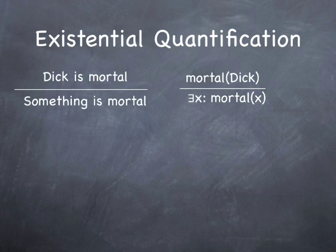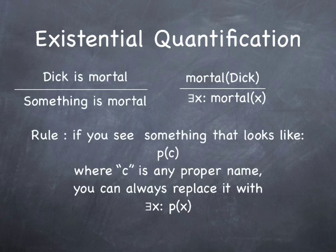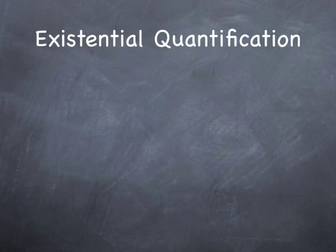So here's the rule. If you see something that looks like this: p parenthesis c, where p is just any predicate and c is a proper name, you can always replace it with there exists x such that p of x. Now let me illustrate with some examples. It's not that hard. Hang with me here.